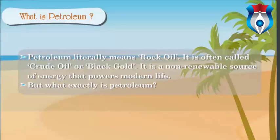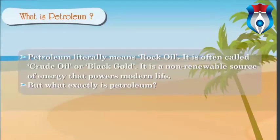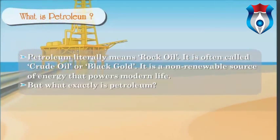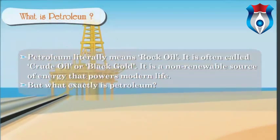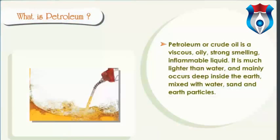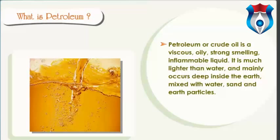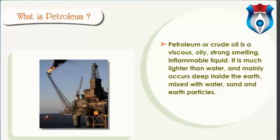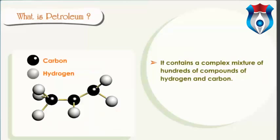Petroleum literally means rock oil. It is often called crude oil or black gold. It is a non-renewable source of energy that powers modern life. Petroleum or crude oil is a viscous, oily, strong-smelling, inflammable liquid. It is much lighter than water and mainly occurs deep inside the earth mixed with water, sand, and earth particles. It contains a complex mixture of hundreds of compounds of hydrogen and carbon.